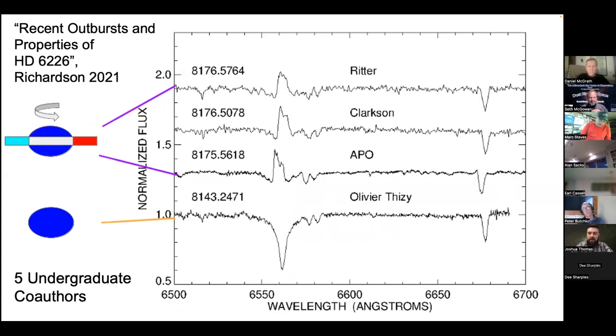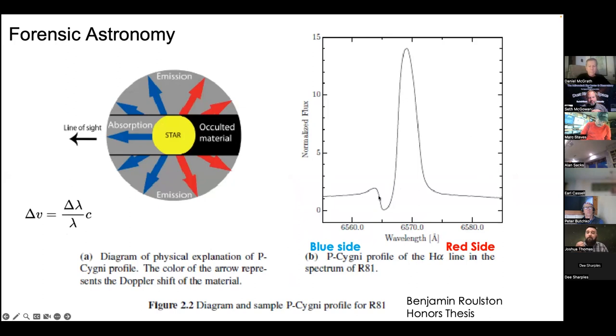Our little dip tells us we are looking at material moving toward us in front of the star. This big emission peak tells us there is also material on the sides of the star. This is what astronomers call a P-Cygni profile, named after the star P-Cygni in the constellation Cygnus. It's right there next to Seth in the background. That is how we learn about the material around a star.